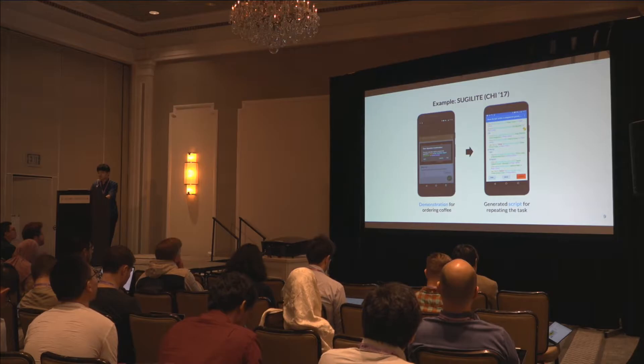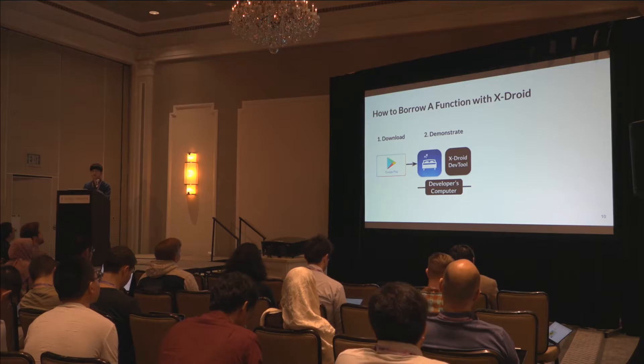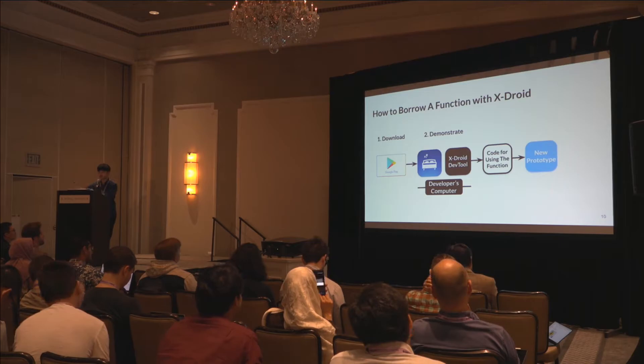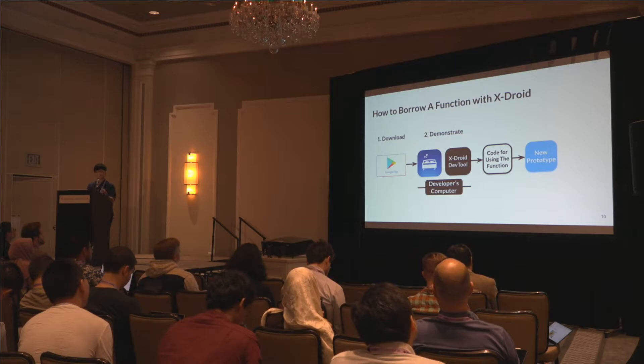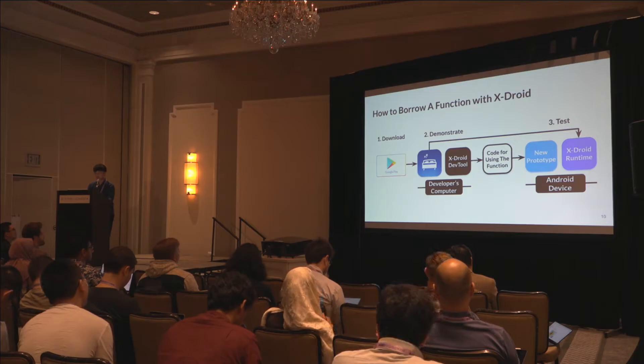CrossDroid utilizes this concept for its goal. To use CrossDroid, you first download the Sleep Tracker app. We then provide a development tool where you can demonstrate how to use the sleep tracking function, which generates code for using that function. Using this code, you can prototype your new feature. When your prototype is deployed for testing, we provide a CrossDroid runtime app which loads the Sleep Tracker app and executes it in the background for your prototype.